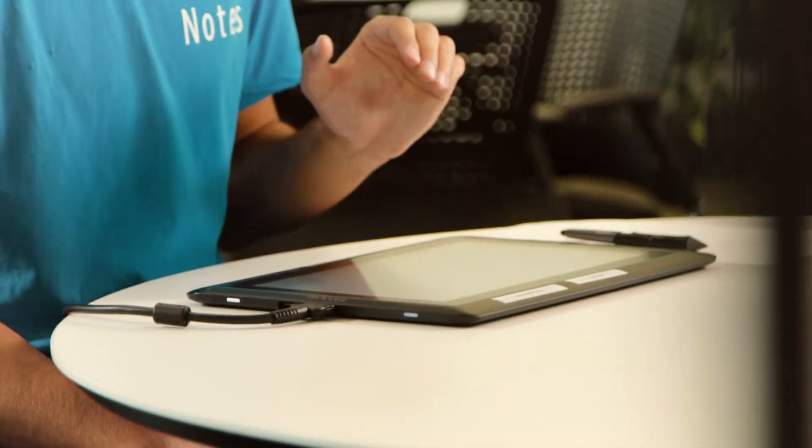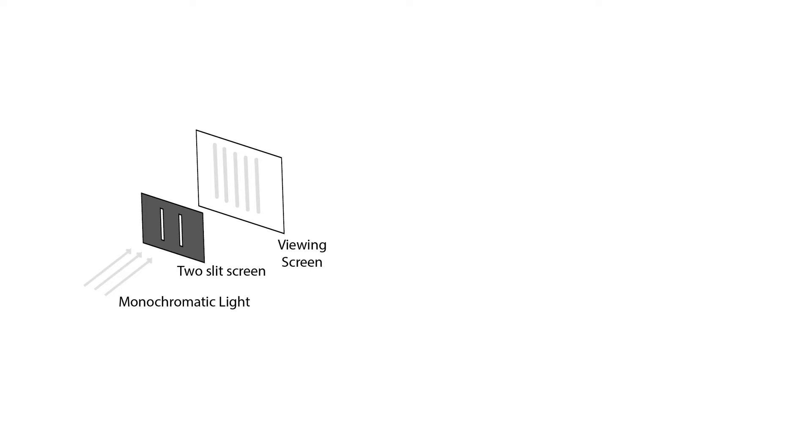If light was a particle, he would expect to see only two bands of light on the screen behind the slit. Those two bands would just be the light that passed through the slits.